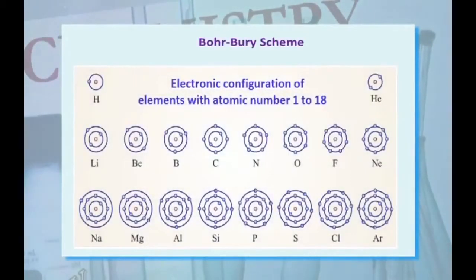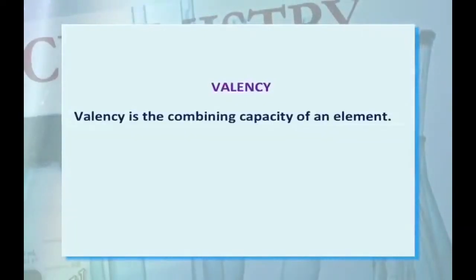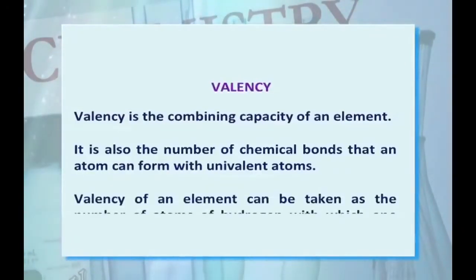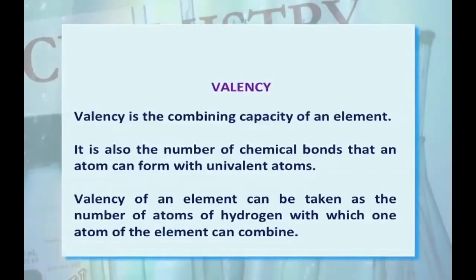This is the representation of electrons filled in different orbits for different elements. The next important term is valency. Valency is the combining capacity of an element. It is also the number of chemical bonds that an atom can form with univalent atoms. Valency of an element can be taken as the number of hydrogen atoms with which one atom of the element can combine.